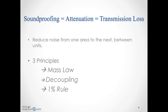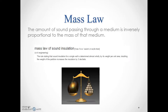The three principles are: mass law, decoupling, and the one percent rule. The mass law is simple and intuitive — the amount of sound passing through a medium is inversely proportional to the mass of that medium. The more mass you have, the more sound attenuation you get. However, that's not the whole story, because there are diminishing returns to just adding mass — primarily through common architectural practices like adding multiple layers of drywall.